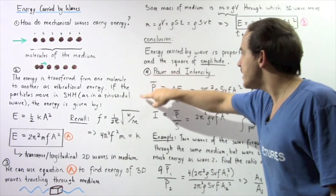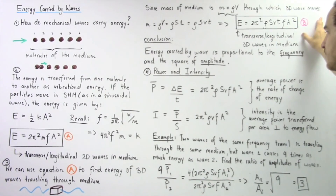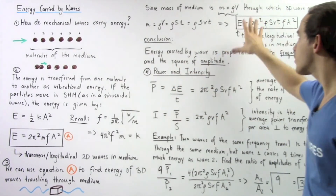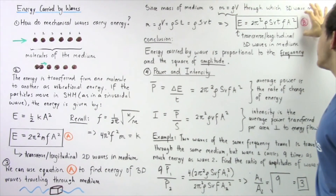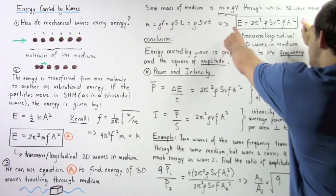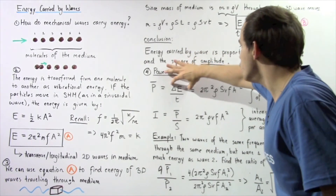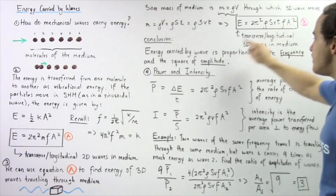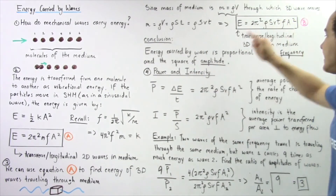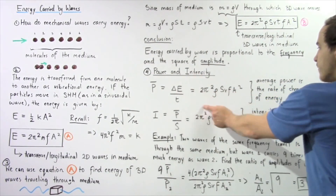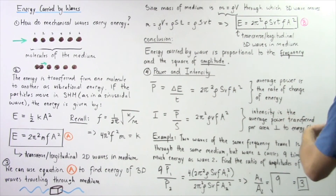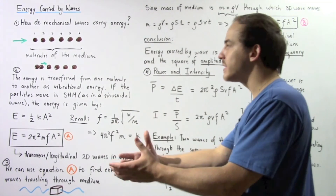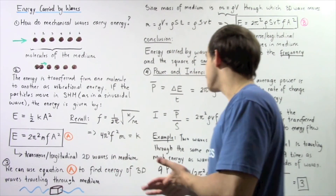From equation B, the change in energy of our three-dimensional mechanical wave propagating in a medium is given by that equation. If we plug this into the numerator of the power formula, the time values appear on top and bottom and cancel out, giving us the average power — the rate of change of energy as our wave propagates a certain distance.